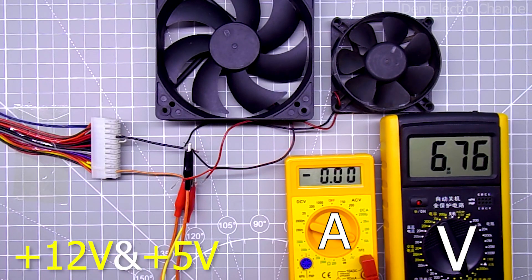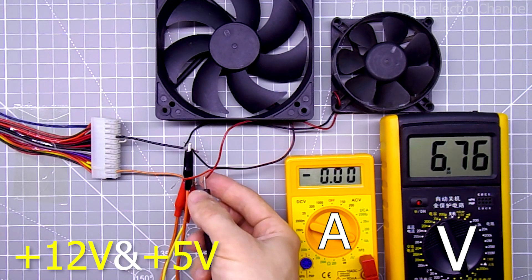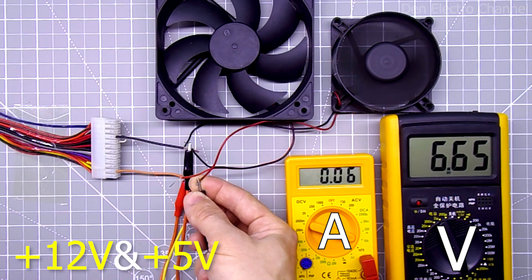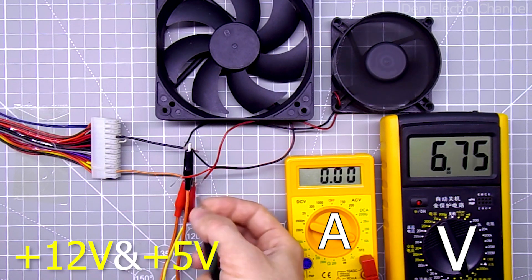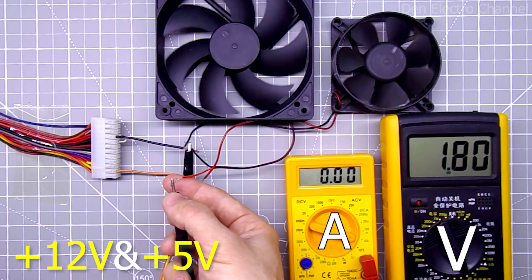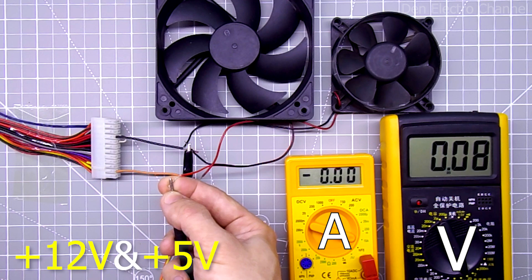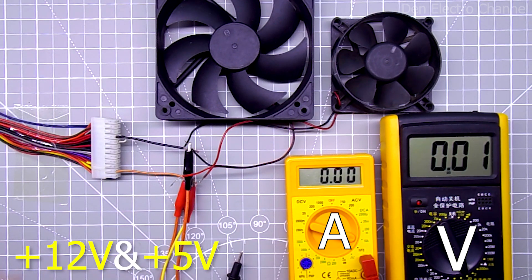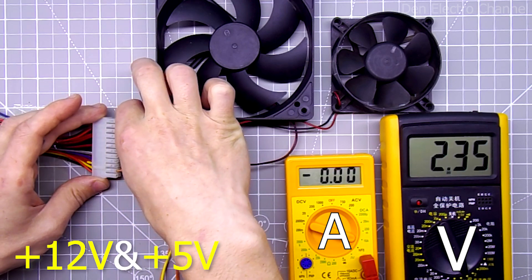Now I'll look between the plus 12 and plus 5 volt lines. The voltage here is 6.8 volts. When connecting a small cooler from a computer, the voltage sags a little. The current is 60 milliamps. I'll disconnect this fan and try to connect a larger cooler. The voltage immediately dropped. The power supply went into overload protection. I pull out the jumper and start the power supply again.